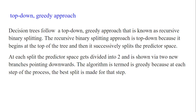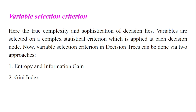At each split, the predictor space gets divided into two, shown by two new branches pointing downwards. The algorithm is termed greedy because at each step of the process the best split is made for that step. This is why it is called the top-down greedy approach.